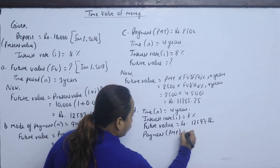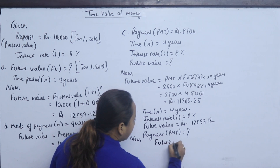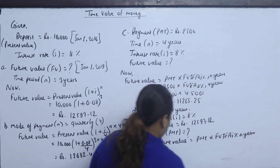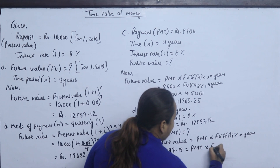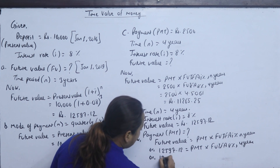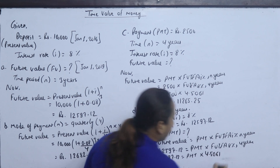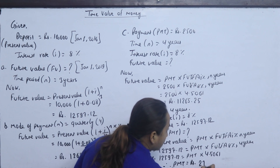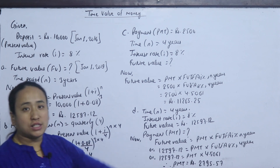Future value is 12,597.12. You have to calculate the payment. The formula is: Payment × FVIFA (i%, n years) = Future value. Using FVIFA at 8% for 4 years = 4.5061. Therefore, the annual payment is 2,795.57. This means you deposit this amount for 4 years to reach the future value.